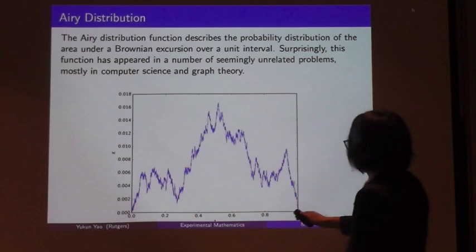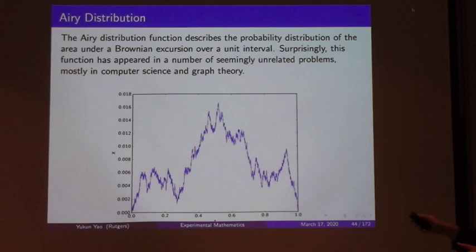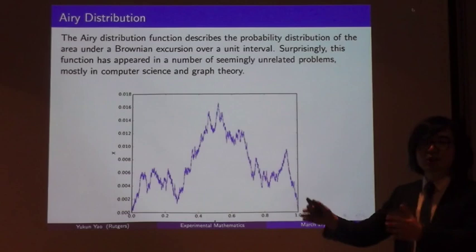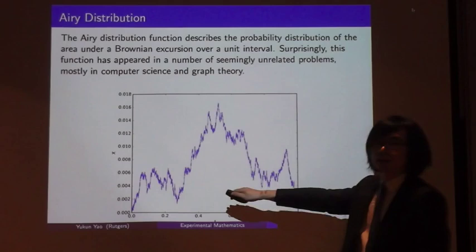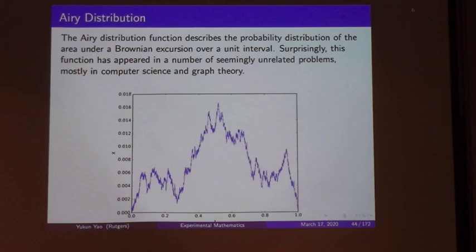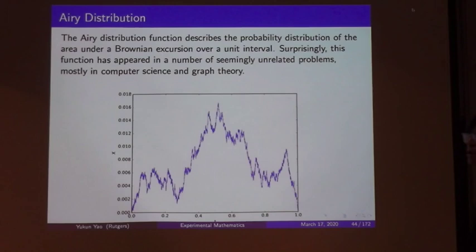The limiting distribution of the area statistic is an Airy distribution, already proved in the literature. The area statistic is so named because it is connected to the area under the Brownian excursion — a Brownian motion starting from the origin, conditioned to return to zero at time 1 and stay non-negative throughout. Surprisingly, the Airy distribution appears in many seemingly unrelated problems: it occurs in parking functions, random planar maps, and other areas of combinatorics and probability.